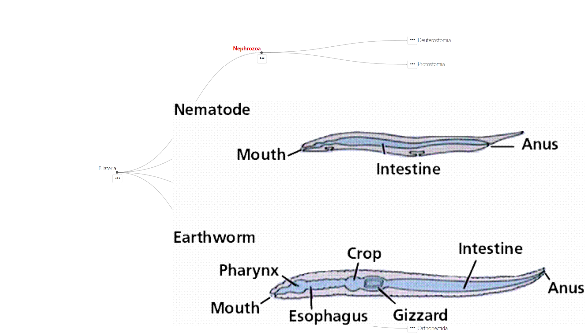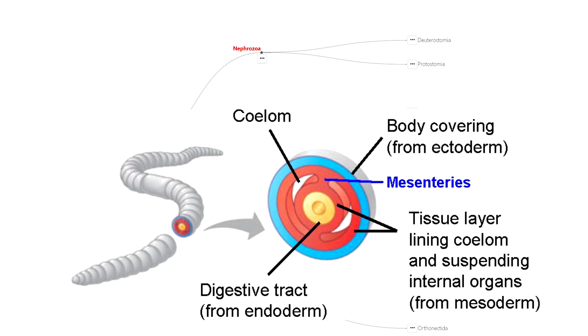Nephrozoa are characterized by possession of a through gut complete with a mouth and anus. They're also coelomates, meaning they have a body cavity which is completely tissue-lined, resulting in a tube within a tube design.